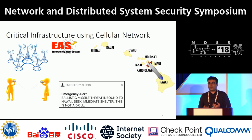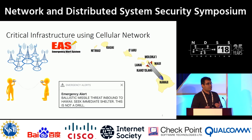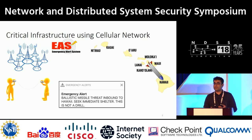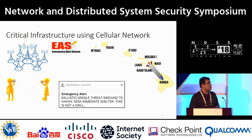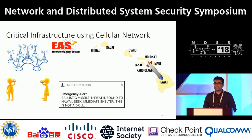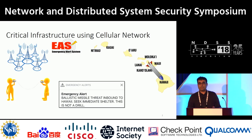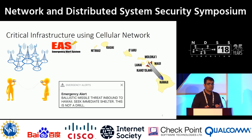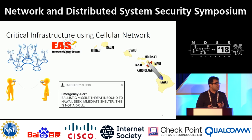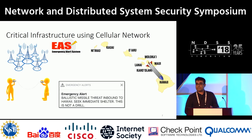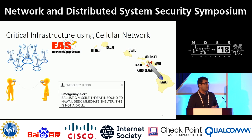Though the message was sent mistakenly, it actually created huge panic among the people. In this paper, we show how an adversary can exploit the vulnerabilities of cellular networks and perform different kinds of security and privacy-related attacks, including broadcasting fake emergency alert messages, which may create artificial chaos among the people.